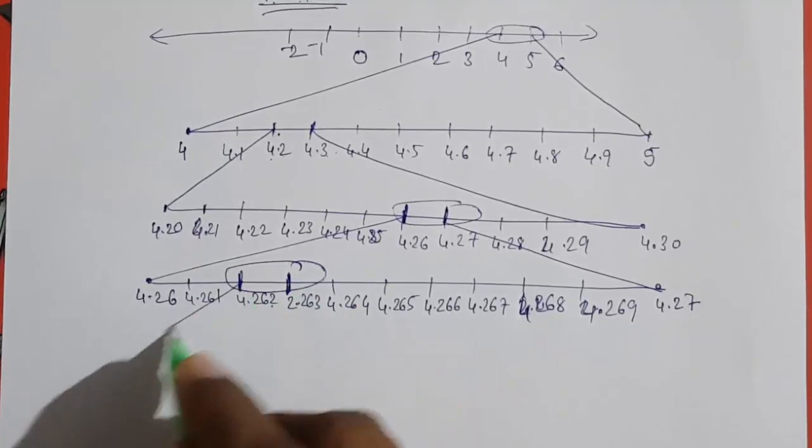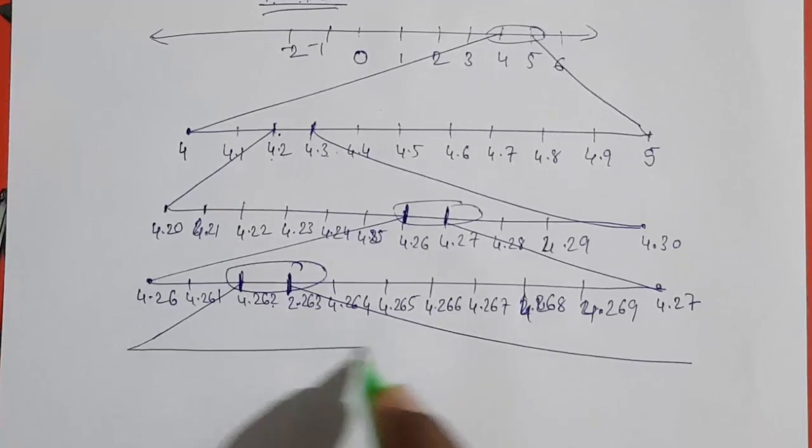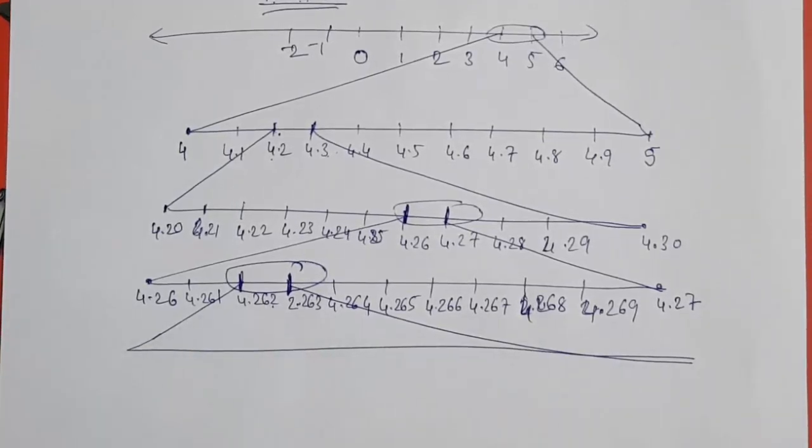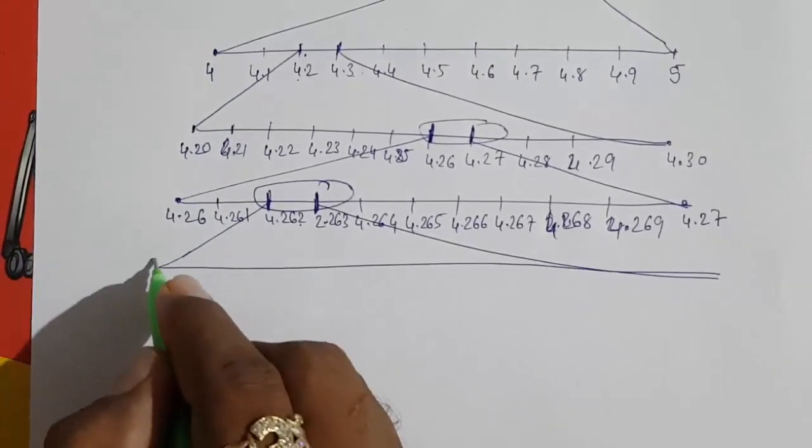Now this is our last line. Here we will get it because we want up to 4 decimals. So 4.262 is there and 4.263 is there.